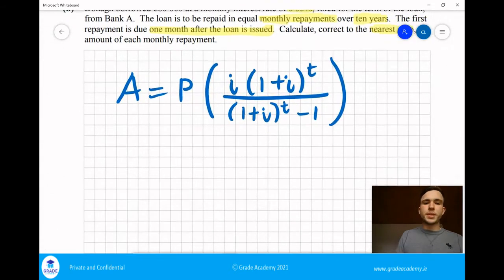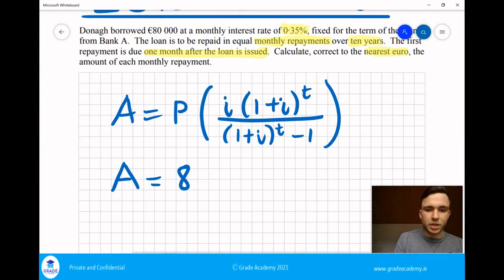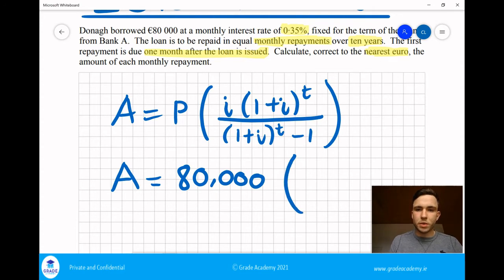So we need to use this amortization formula. Do we know what A is? No, we don't, so we're going to leave that blank. Do we know what P is? Yes, that's the 80,000 euro that he's borrowed. Do we know what i is? We do. It's 0.35%, so we just need to put it as a decimal: 0.0035.